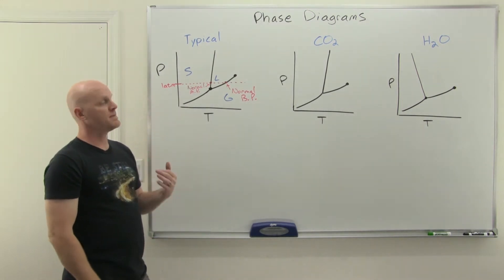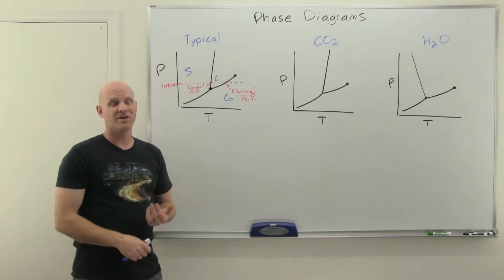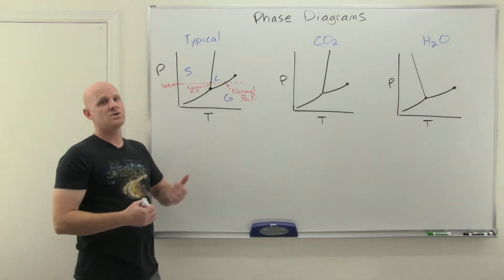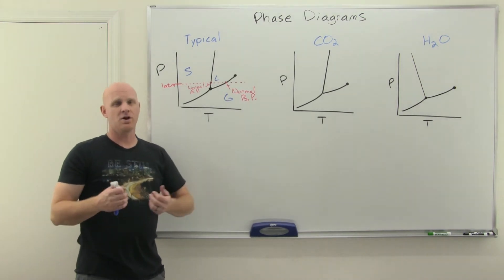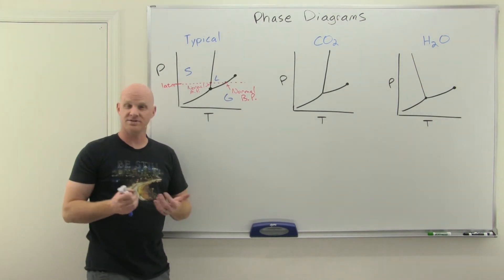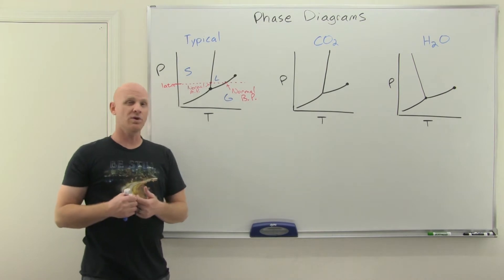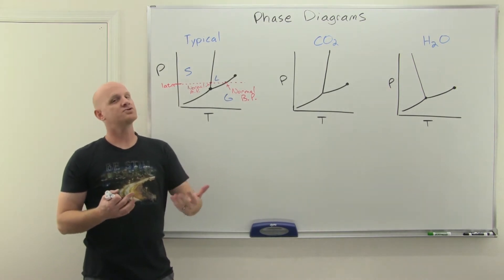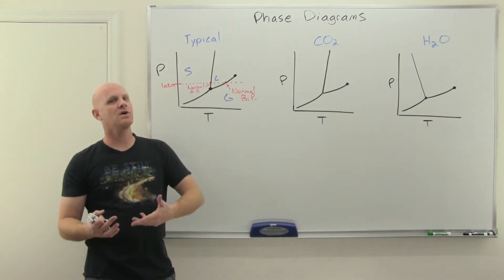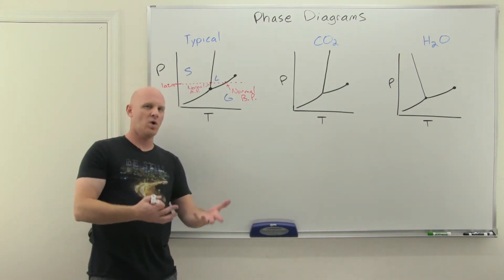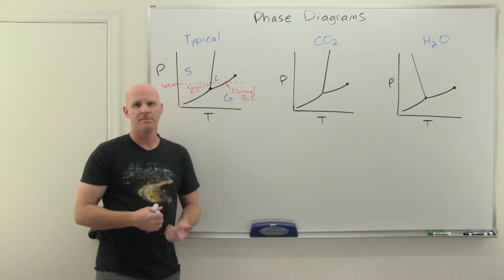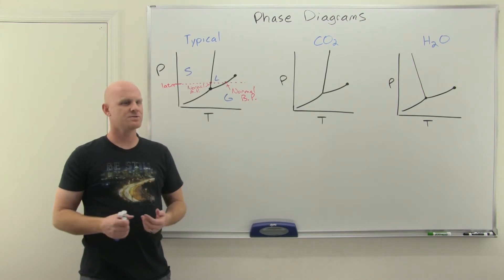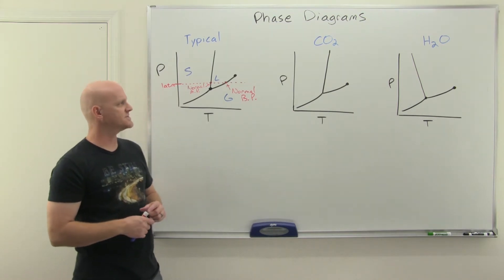Your melting point and boiling points are totally pressure dependent. When we say the melting point of water is 0°C and the boiling point is 100°C, that's true as long as you're at one atmosphere. But if you're at any other pressure, those points are going to change.